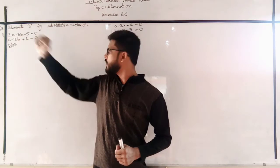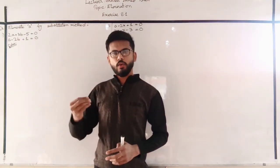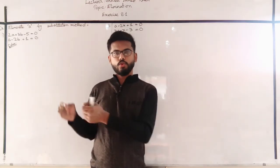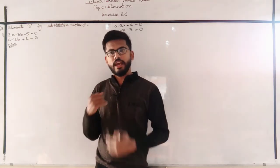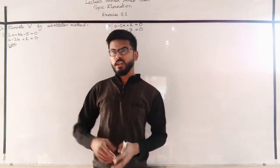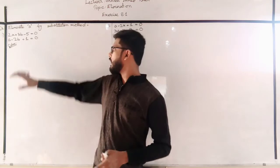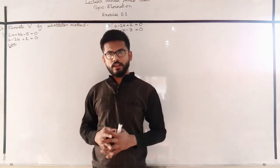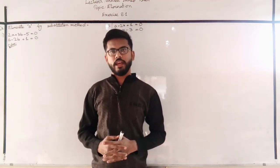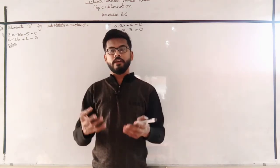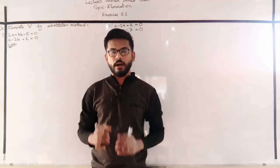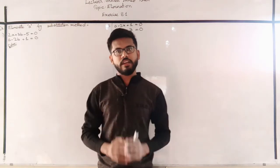The question asks us to eliminate 'a' — meaning remove 'a' from the equations so that 'a' does not remain in the result. In other words, we need an expression independent of 'a' — a relationship or equation that does not contain 'a'. This is what substitution method is about — we need to find an equation without 'a'.